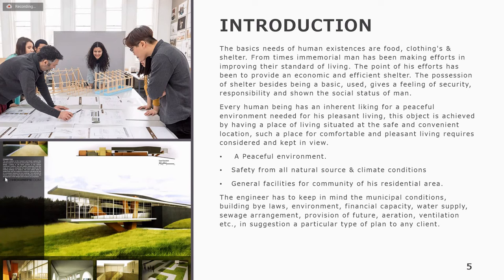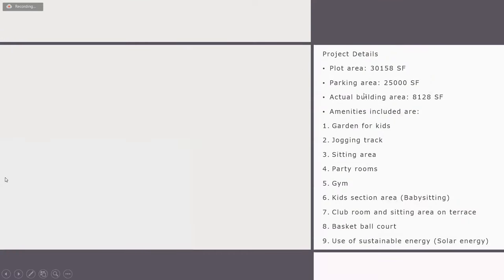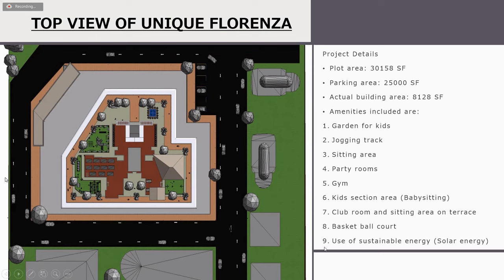Coming to Topic 2 - Unique Florenza project details: the plot area is 30,158 square feet, the parking area is 25,000 square feet, and the actual building area is 8,128 square feet. Amenities included are a garden, jogging track, sitting areas, party room on the ground floor, gym, kids section, babysitting, club room, sitting area on terrace, basketball court, and use of sustainable solar energy. This is the top view site plan of the entire plan.